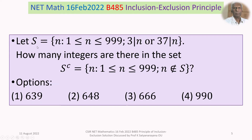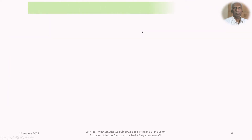We are given a set S consisting of natural numbers 1 ≤ n ≤ 999, wherein 3 divides n or 37 divides n. All such numbers from 1 to 999 both inclusive are in S. We need to find how many integers are in S complement — that is, all those n wherein 1 ≤ n ≤ 999, n does not belong to S, meaning 3 does not divide n and 37 does not divide n.